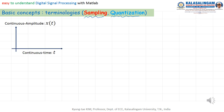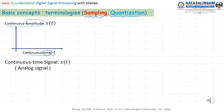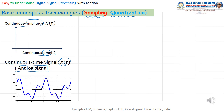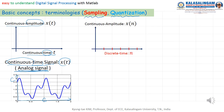The signal is represented in this graph with continuous time and continuous amplitude. We call this a continuous time signal X of t — otherwise, you can say analog signal. For example, this signal: this is a time domain signal and it is continuous in both time and amplitude.